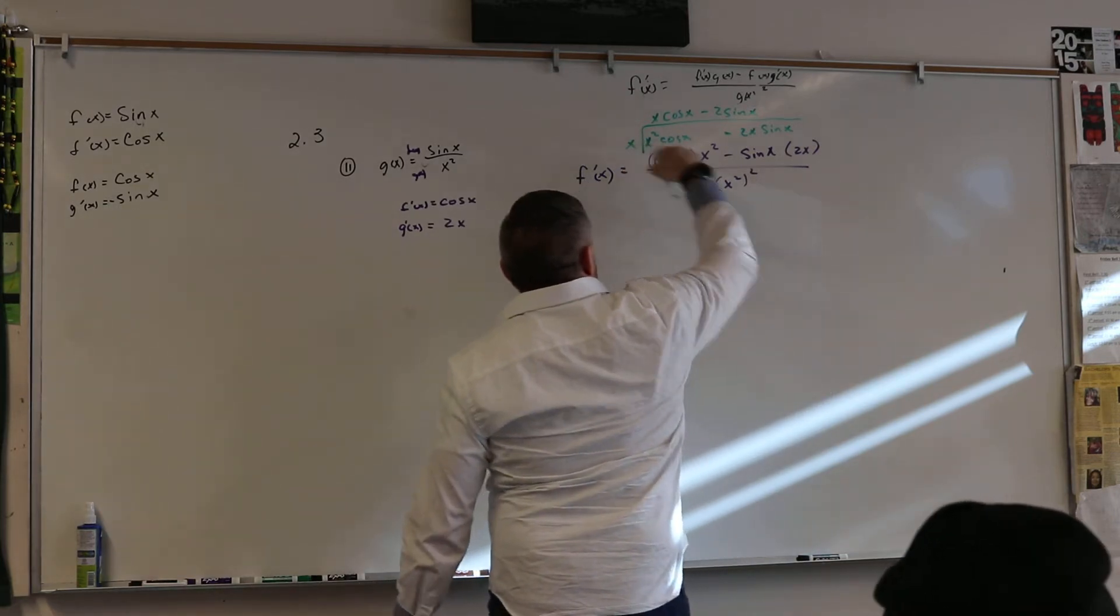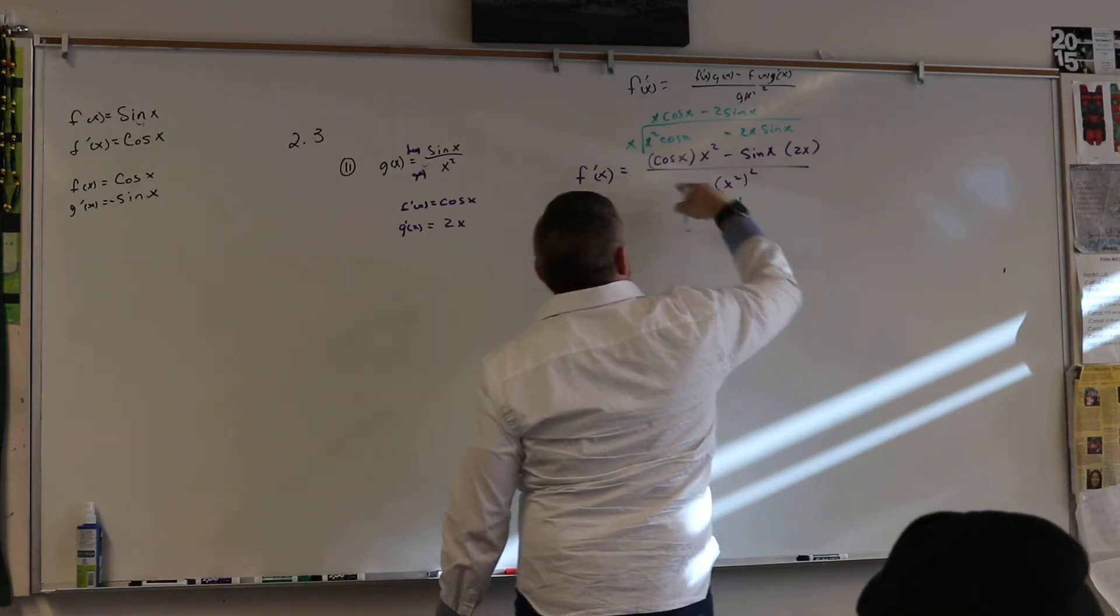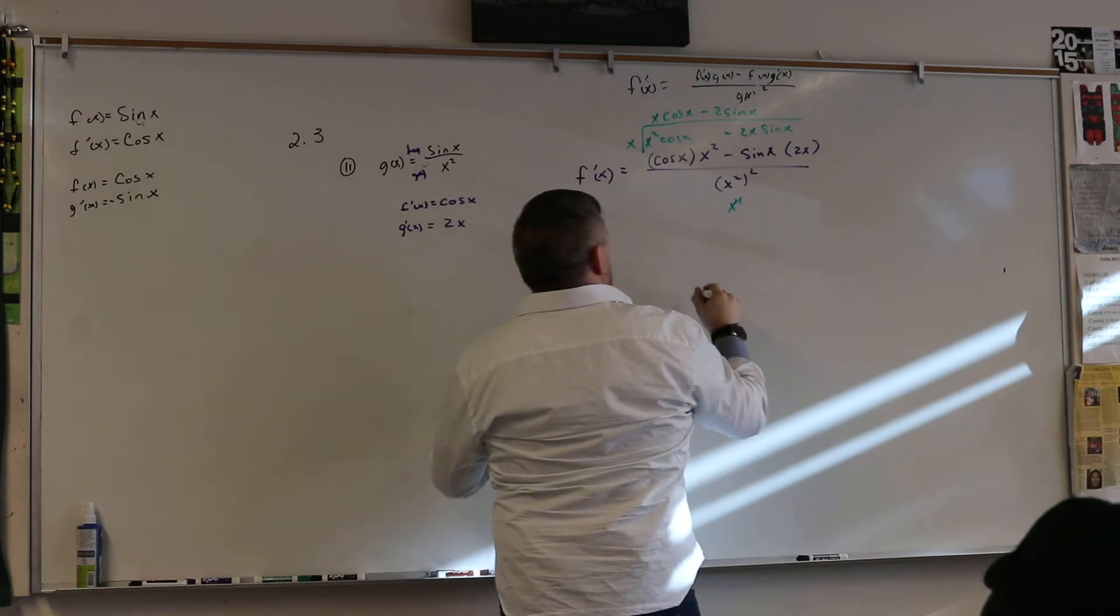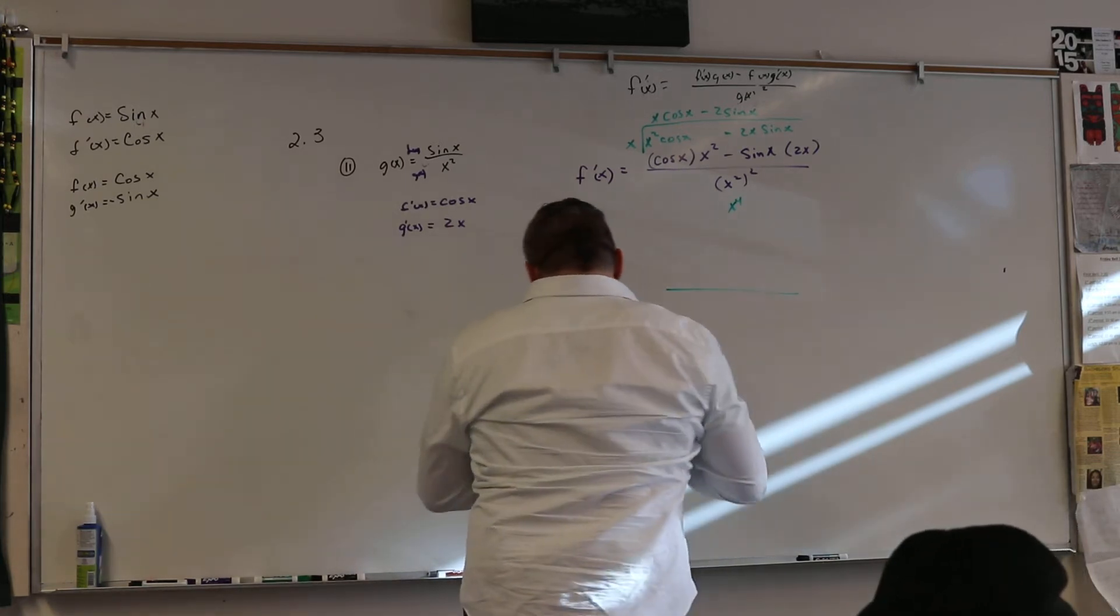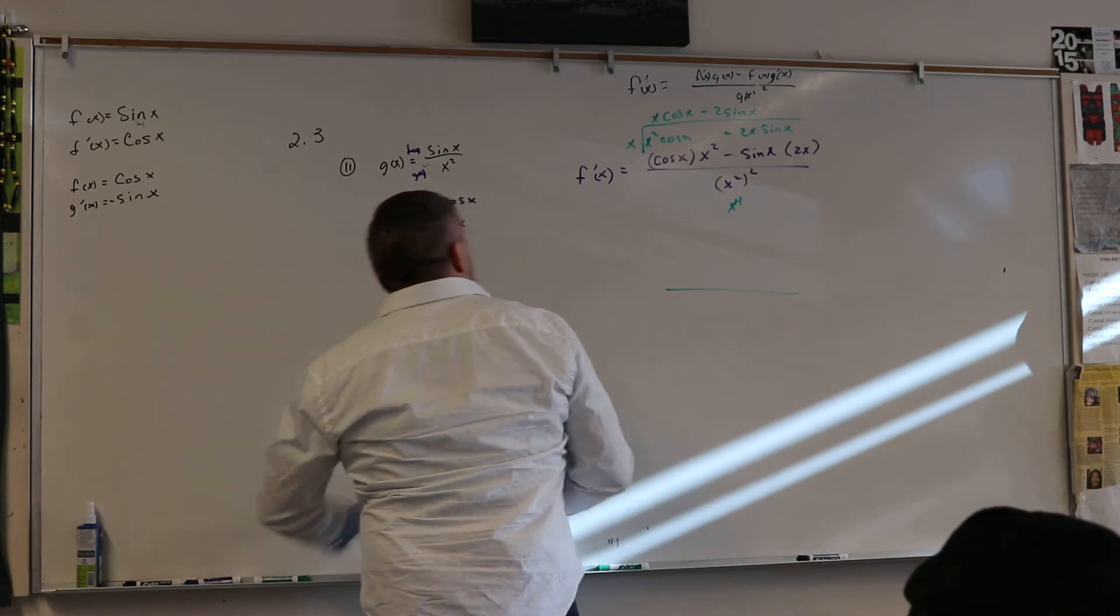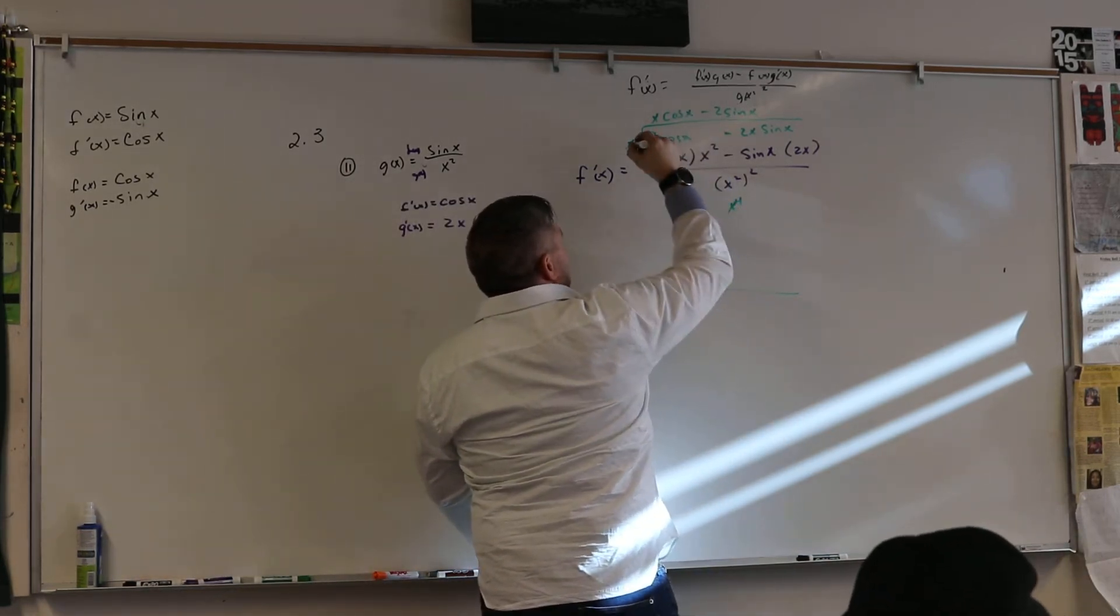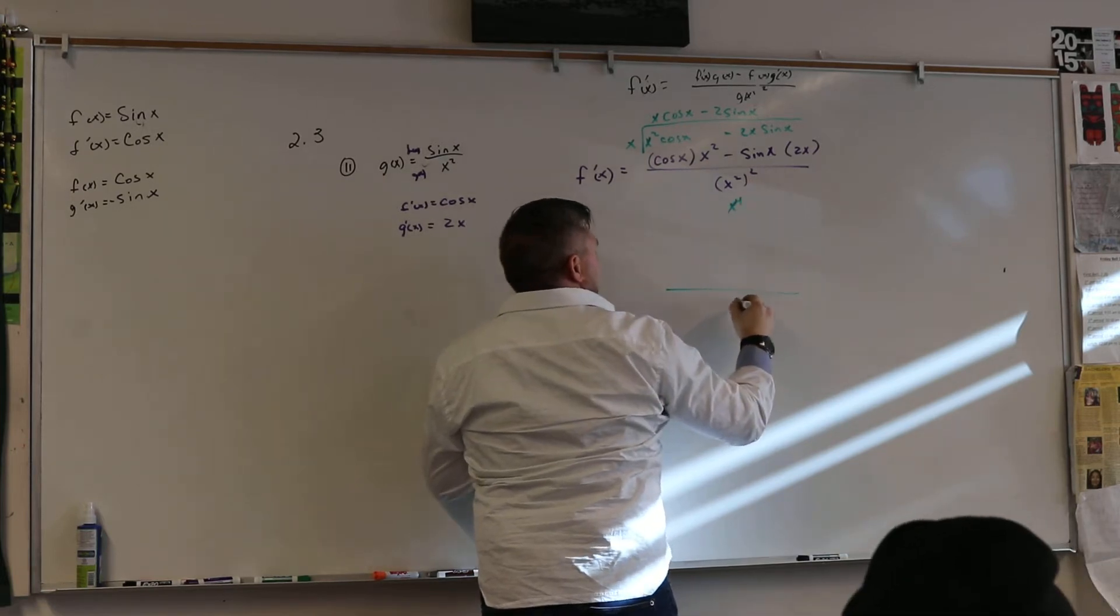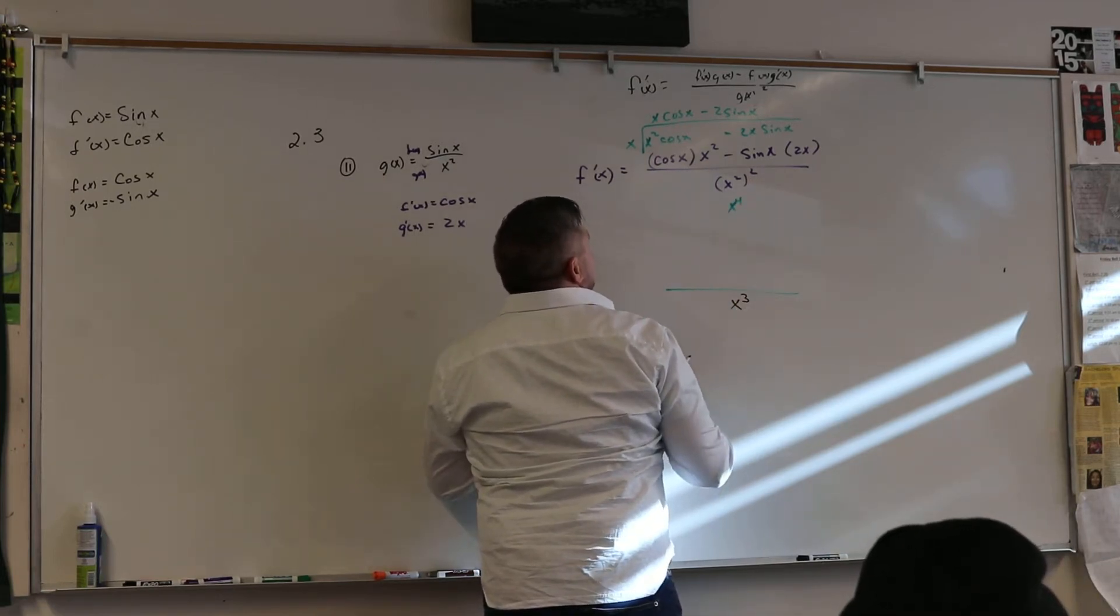Since this would just be x to the fourth, we would take one of those x's away. Let's write it in black. So one of these x's would cancel with one of these, and that would be x cubed. Right?